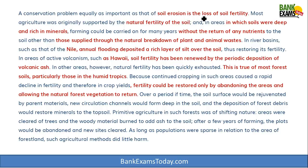The passage begins: 'A conservation problem equally as important as that of soil erosion is the loss of soil fertility.' Most agriculture was originally supported by the natural fertility of the soil. In areas where soils were deep and rich in minerals, farming could be carried on for many years without returning any nutrients — meaning farmers were using the soil without replenishing its nutrients.